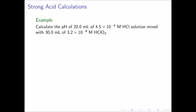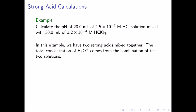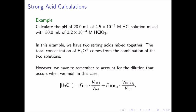Sometimes we have a mixture of two different strong acids. In this example, we will calculate the pH of 20.0 milliliters of 4.5 times 10 to the negative 4 molar hydrochloric acid, mixed with 30.0 milliliters of 3.2 times 10 to the negative 4 molar chloric acid. We have two strong acids mixed together, but the total concentration of hydronium ion comes from the combination of both solutions. However, we have to remember to account for the dilution that occurs when we mix them.